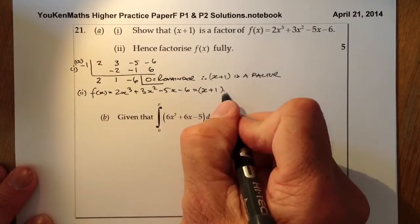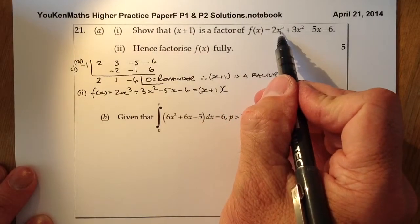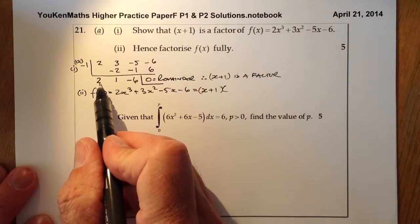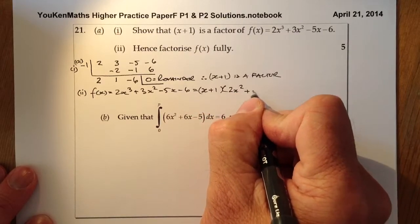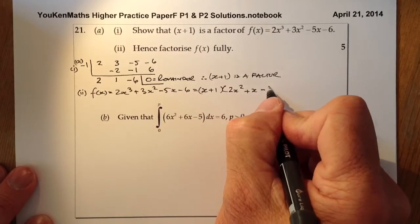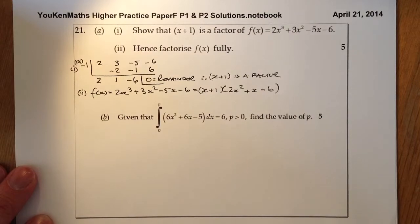I'll take the quotient from here. Starting with x cubed, that'll be 2x². So I've got 2x² + 1x - 6. That's the quotient.